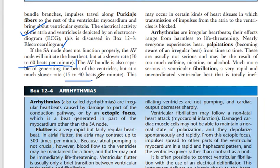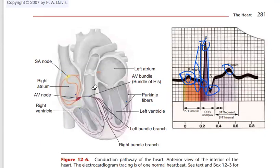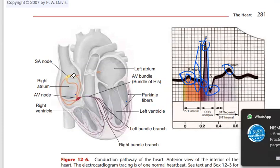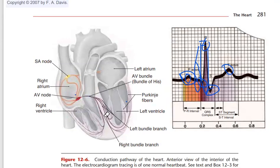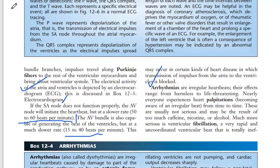The AV bundle is also capable of generating a beat, but much more slowly — at 40 to 50 beats per minute. For the ventricles, even more energy is needed; ventricles will beat only 15 to 40 beats per minute. This may occur in certain heart diseases in which transmission of impulse from the atrium is blocked. Any disturbance in conduction — whether the SA node, AV node, Purkinje fibers, or Bundle of His is not functioning — those types of irregular heartbeats are known as arrhythmias.